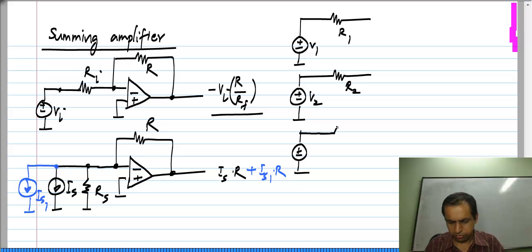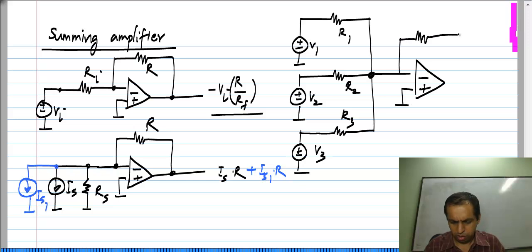Let's say we have three voltages. You can have any number of them, and if you have an ideal op-amp, this is at 0 volts. The current V 1 by R 1 flows there, V 2 by R 2 flows there,